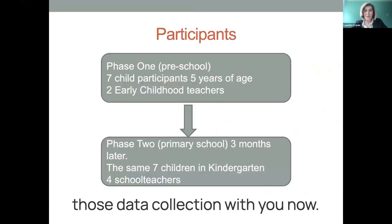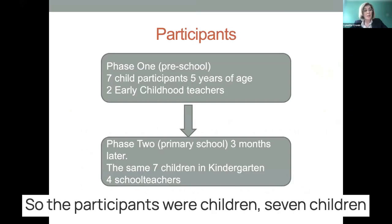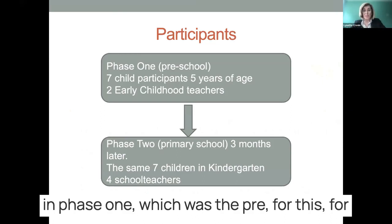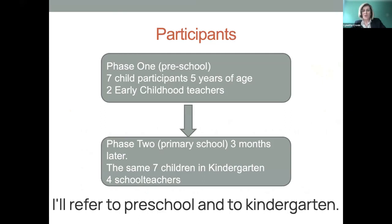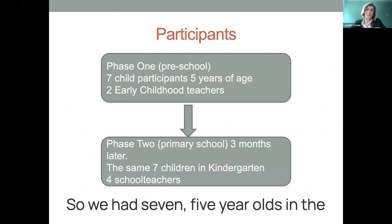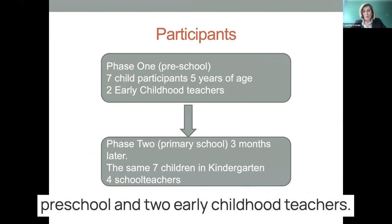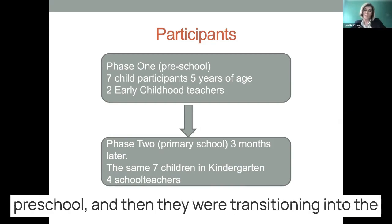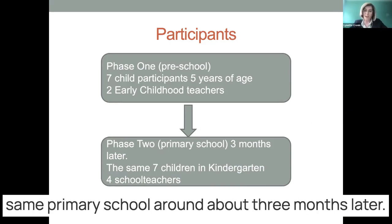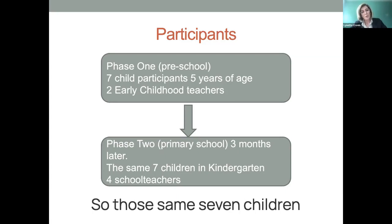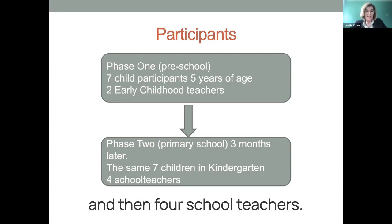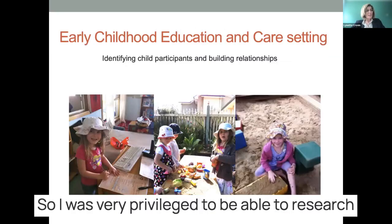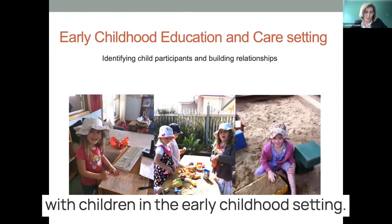The participants were seven children in phase one — the preschool — and two early childhood teachers. These children were in their last weeks of preschool and then transitioned into the same primary school around three months later. So those same seven children, and then four school teachers participated in phase two.